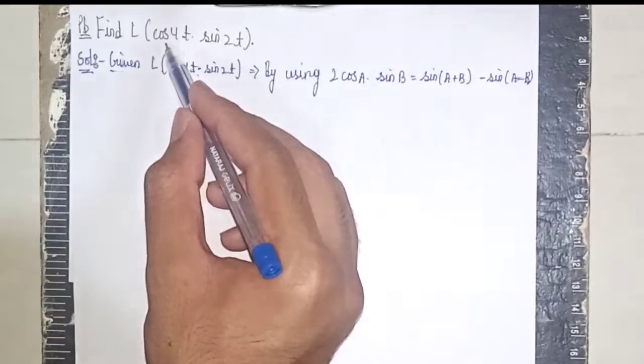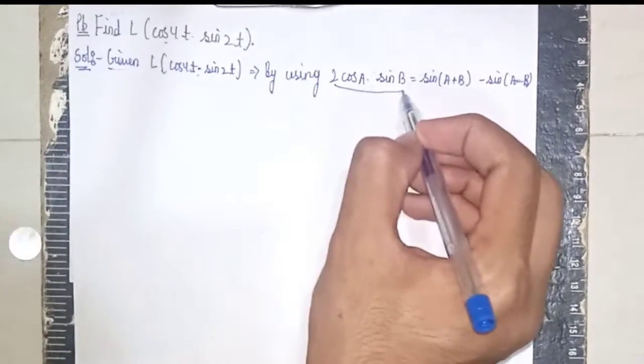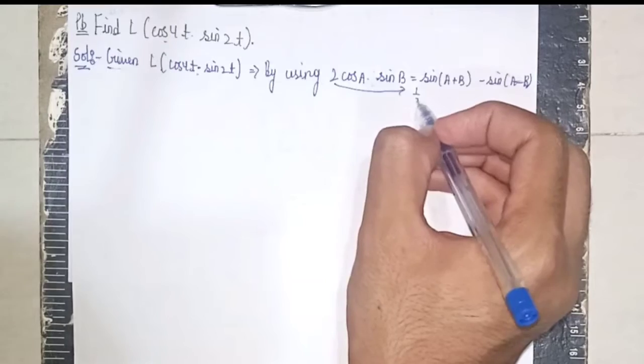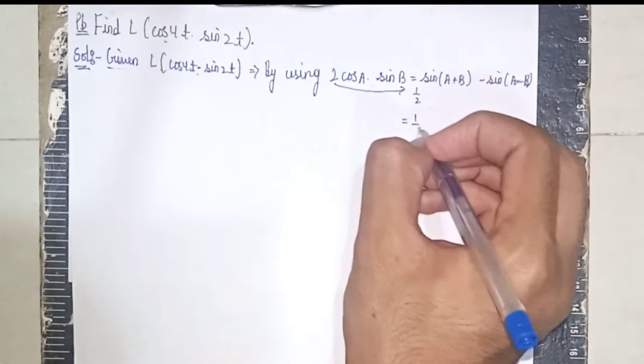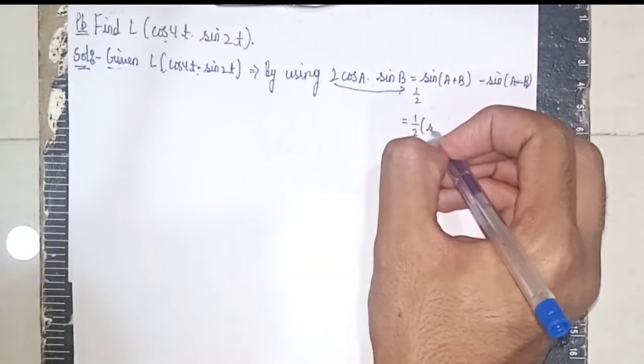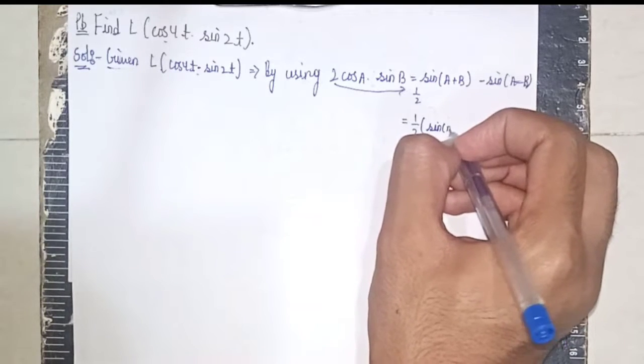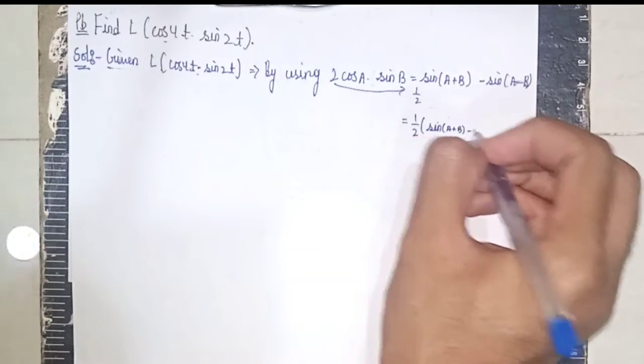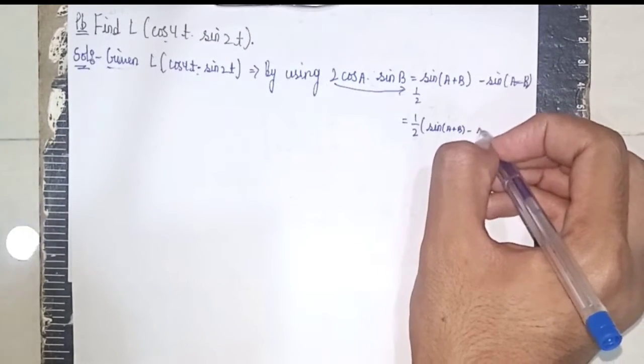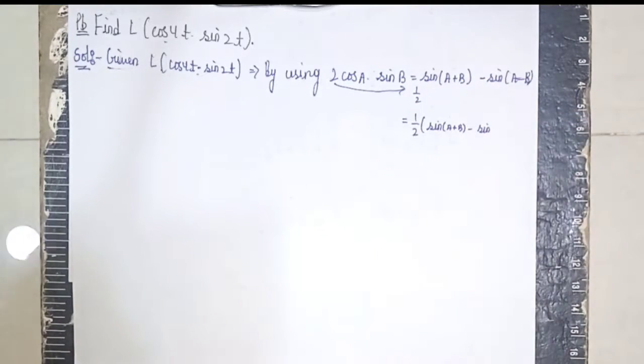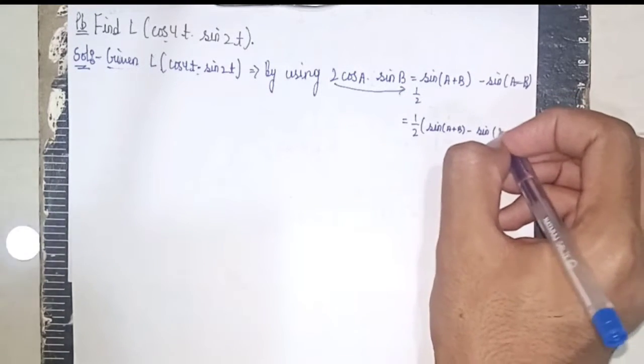We need only cos a and sin b, so I'm sending the 2 to the other side. It becomes divided by 1 by 2, so we get 1 by 2 times sin (a plus b) minus sin (a minus b).